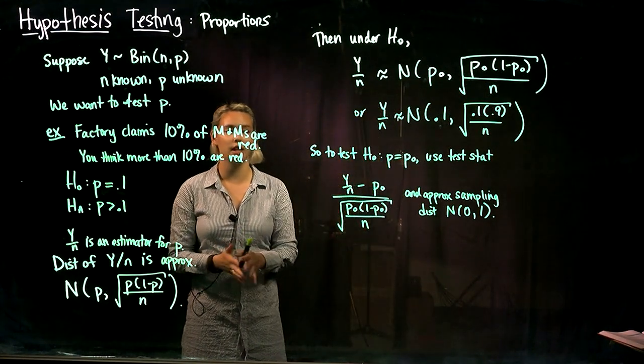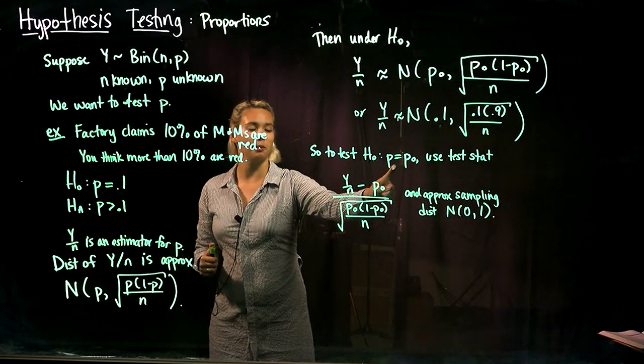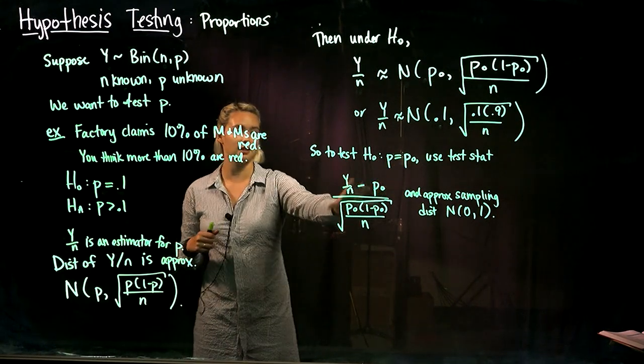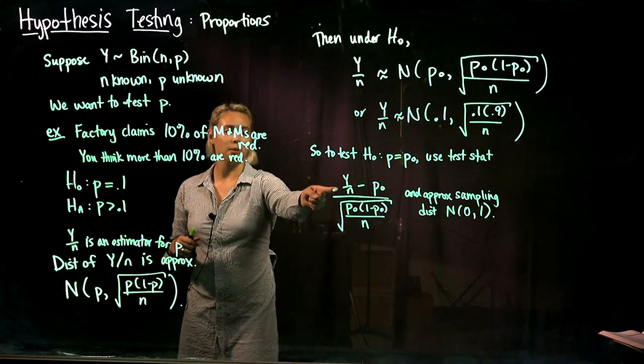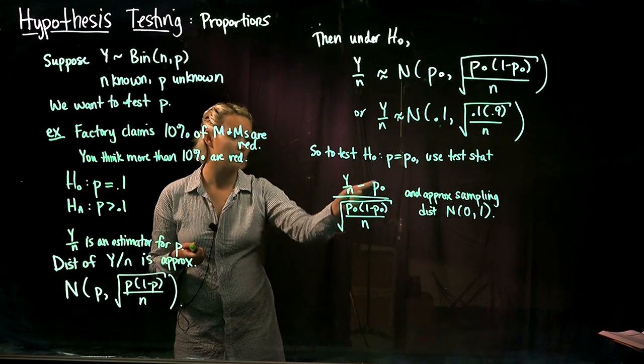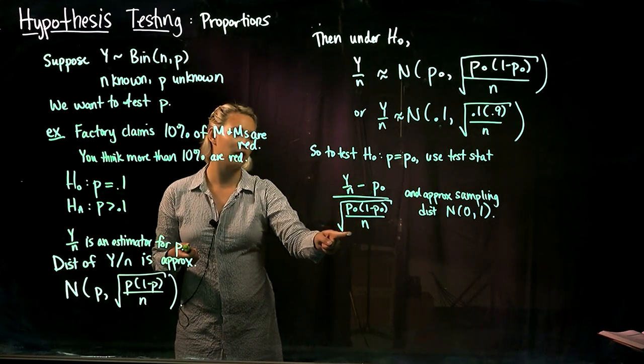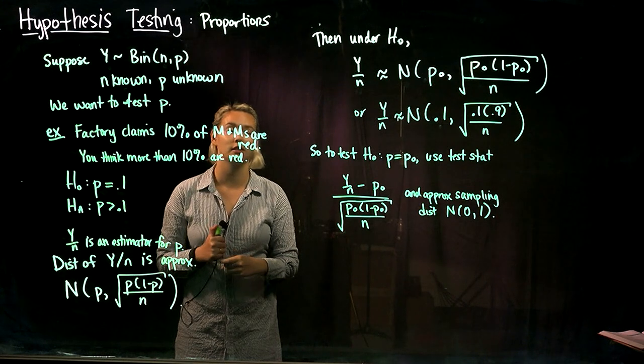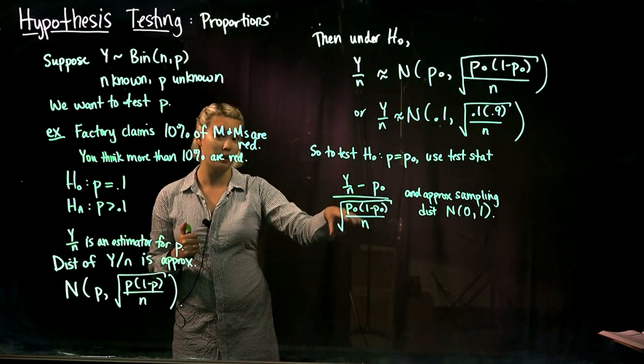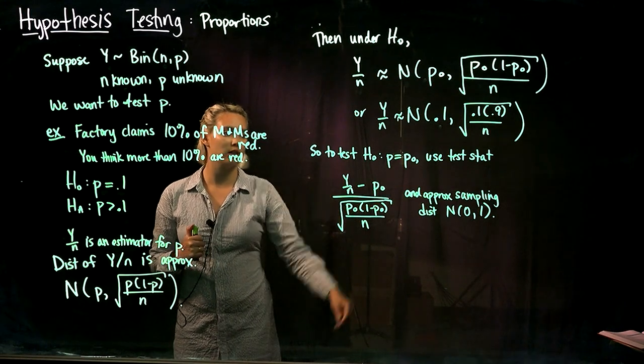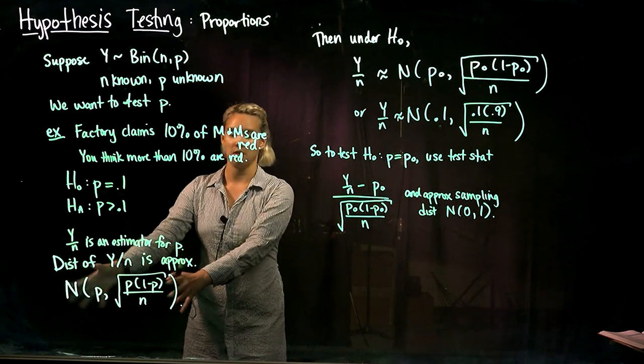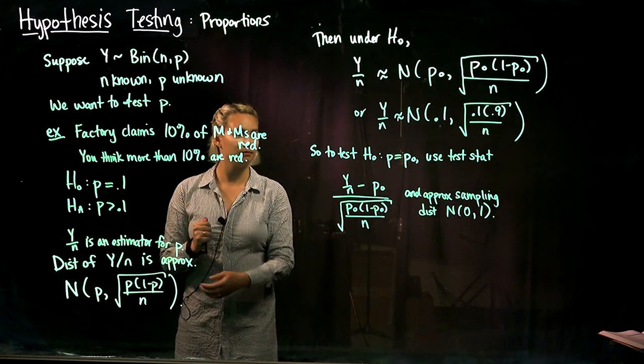So if we want to test the null hypothesis that a proportion is equal to some value p-naught, we're going to use this test statistic: sample proportion minus the value of the proportion under the null hypothesis divided by the standard error under the null hypothesis. Remember, we calculate our test statistic under the null hypothesis, and then we use the approximate sampling distribution standard normal because that's what's given here.